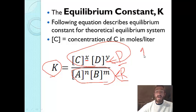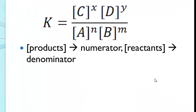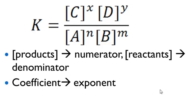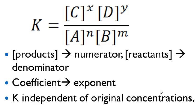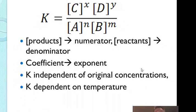We use 1 to denote the difference between large and small K values. Remember, the products are always in the numerator and the reactants always in the denominator for any expression we write. C and D are products; A and B are reactants. The coefficients become exponents. Also, K is independent of the original concentrations, but K is dependent on temperature — if you change the temperature, it can shift in either direction.